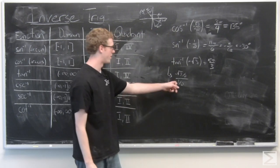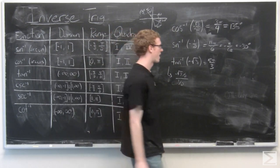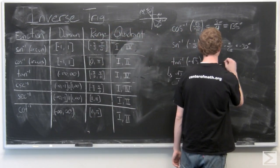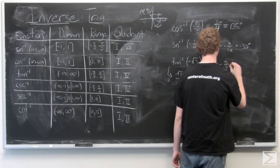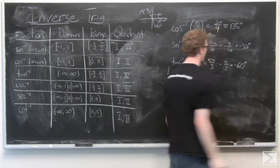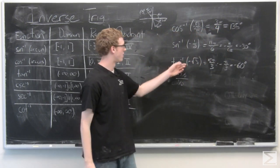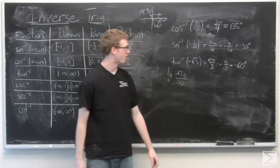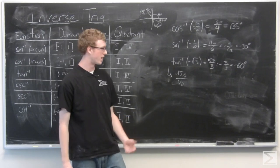which corresponds to this unit circle point. But then we're going to subtract 2π. So inverse tan of negative √3 is negative π/3 or negative 60 degrees.